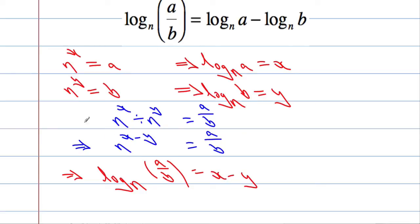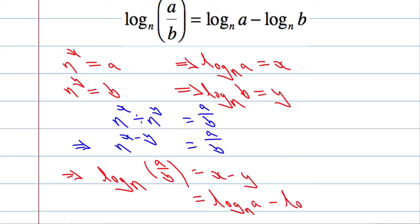Now let's rewrite this last line using logs. The power of n that gives me an answer of A over B must equal x take away y. We know x is log to the base n of A, and y is log to the base n of B. So log to the base n of A over B equals log to the base n of A minus log to the base n of B. Hence we've proved the rule.